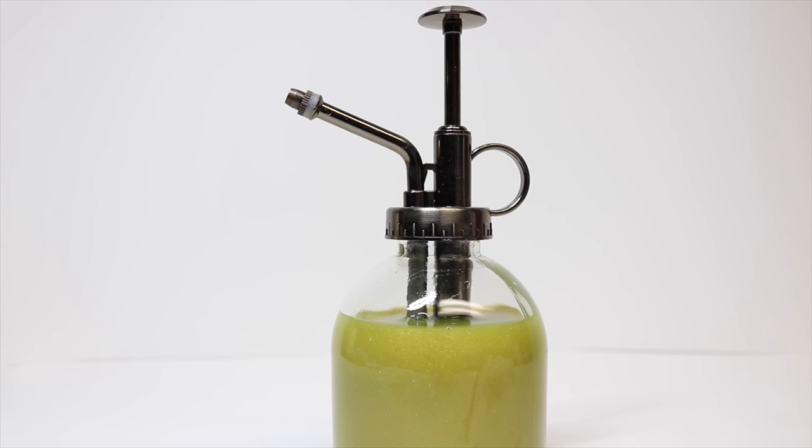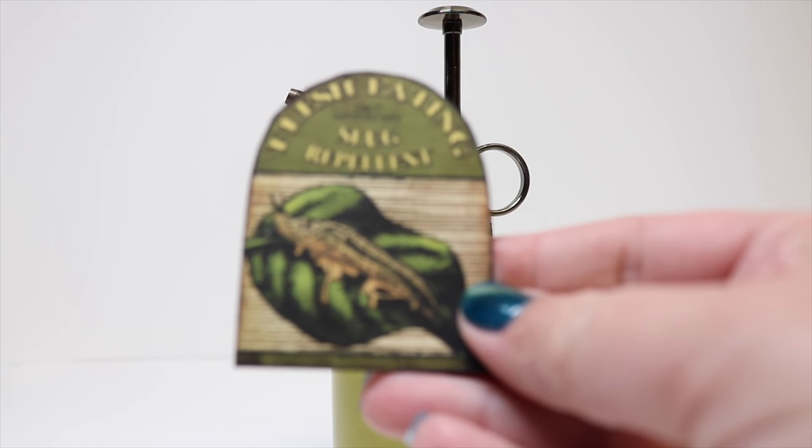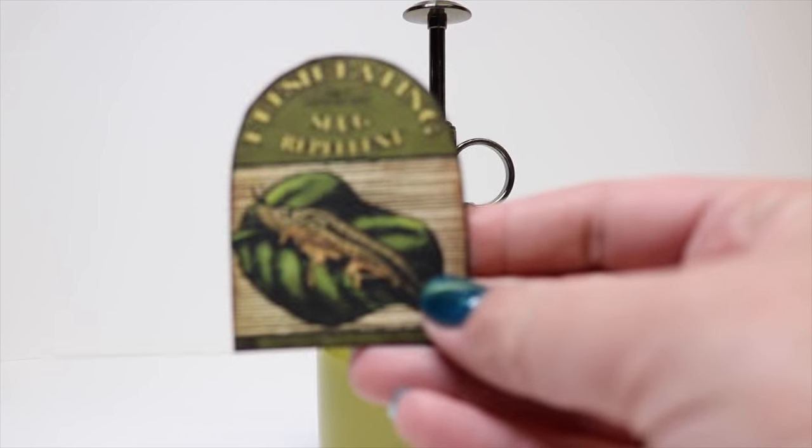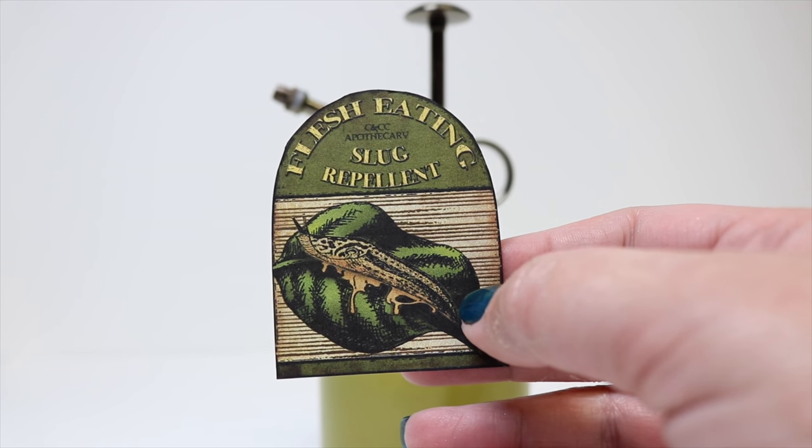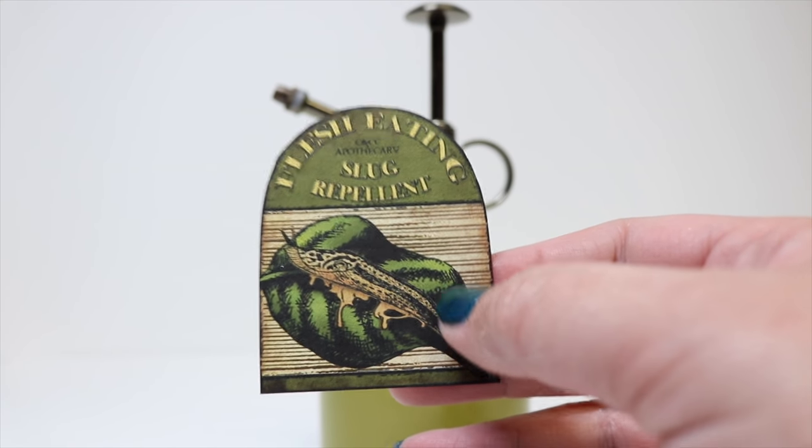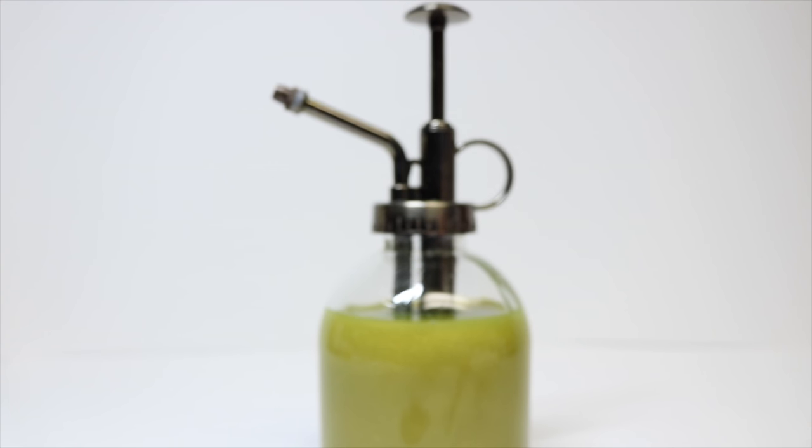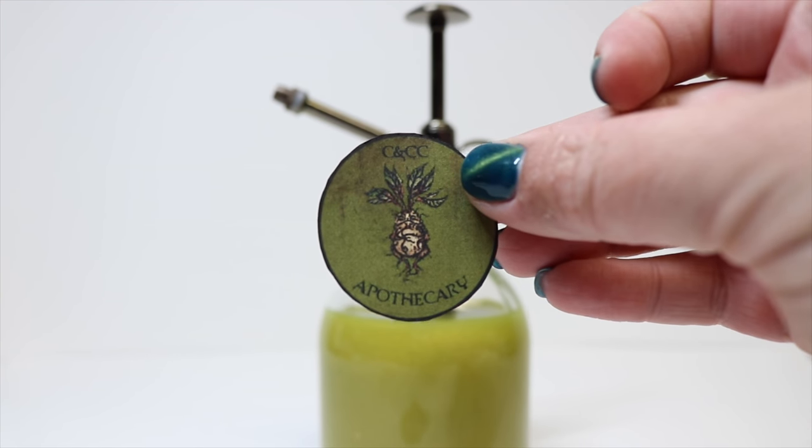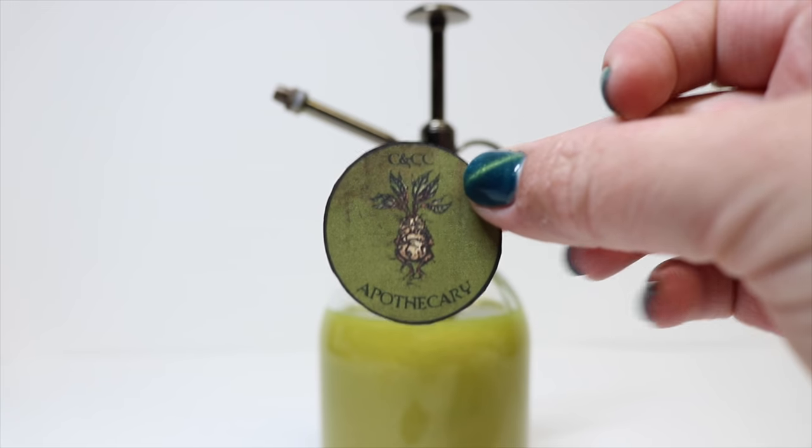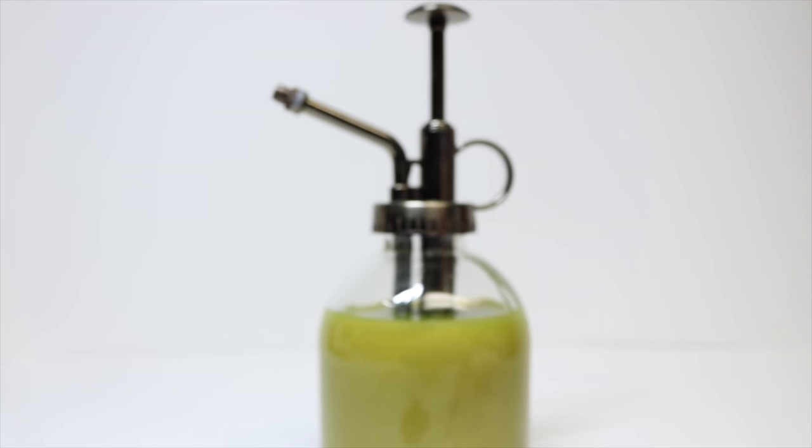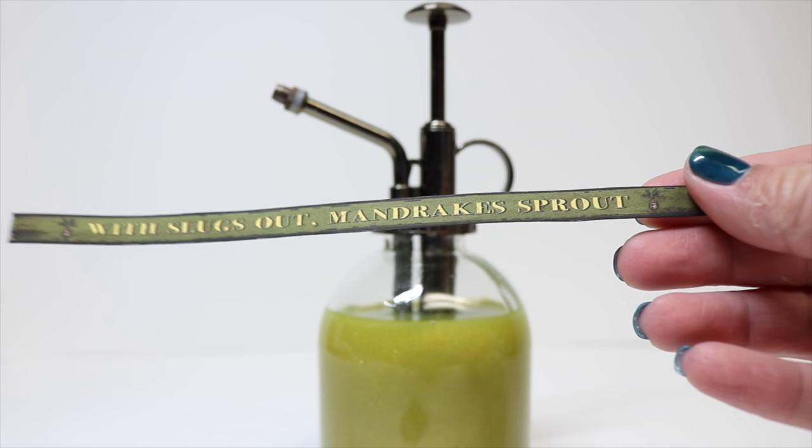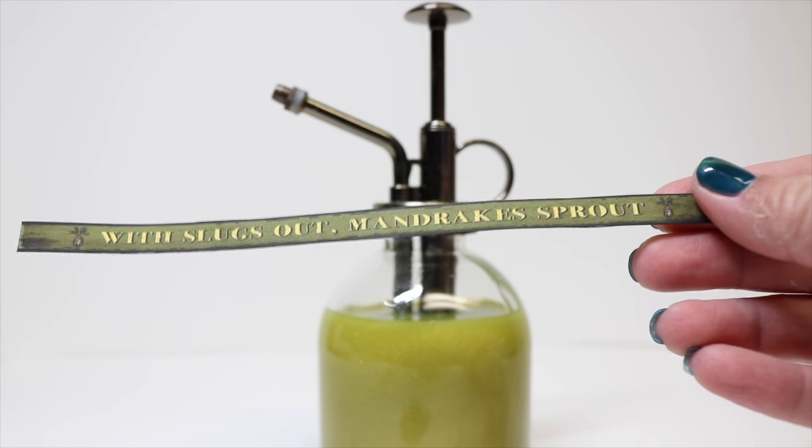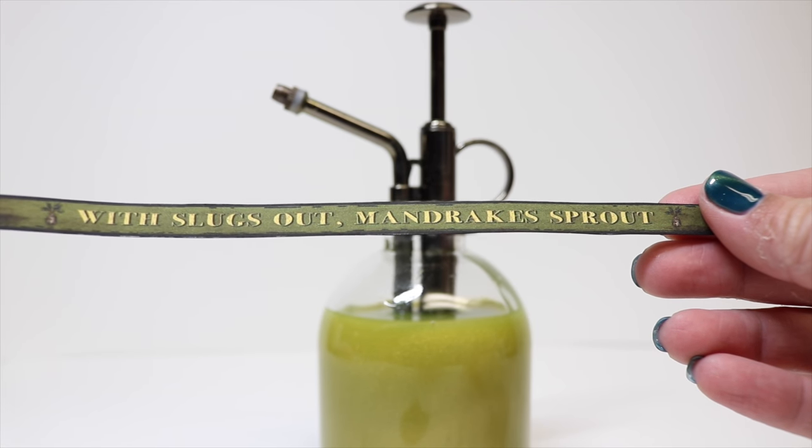To finish this off we're going to add our labels. I've actually created three for this, so we have the main one that will go on the front that says flesh-eating slug repellent and has the slug on there, and then it has C&CC apothecary for cooking and craft chick. On the back we're going to do this C&CC apothecary sticker with the little mandrake on it. Then there is a bottom tag that says with slugs out mandrake sprout. I'll show you how we're going to get all of these onto our container.